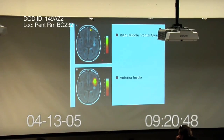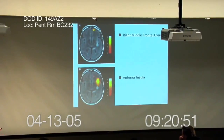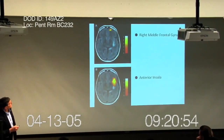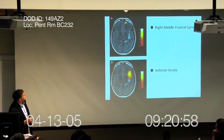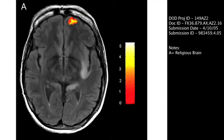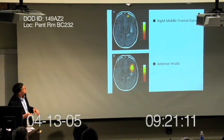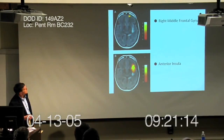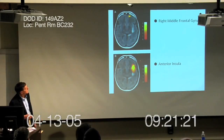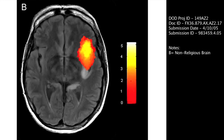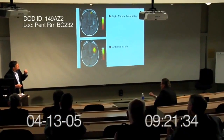In each case, these individuals were read a religious text. This individual — the religious fanatic — lit up the right middle frontal gyrus, shown here, and that's a part of the brain associated with theory of mind; it has to do with intents, beliefs, and desires. In marked contrast, the individual who would not particularly self-describe as religious, when read a religious text, showed activation of the anterior insula — a part of the brain associated with disgust or displeasure on hearing something.